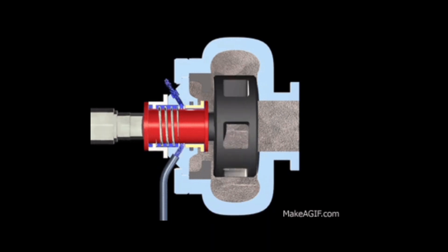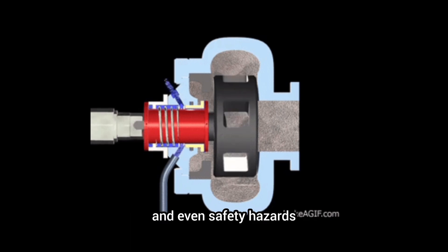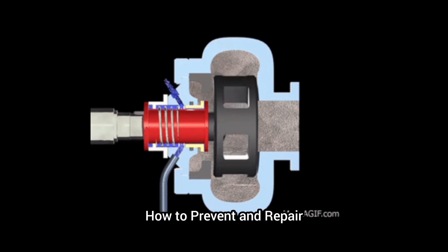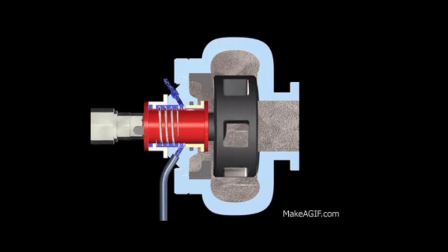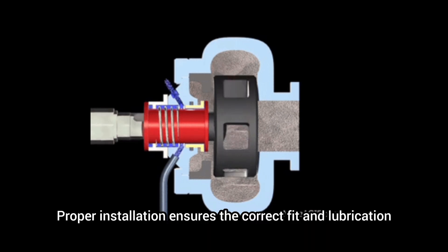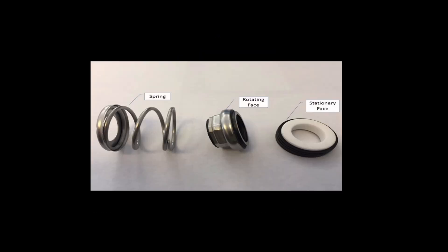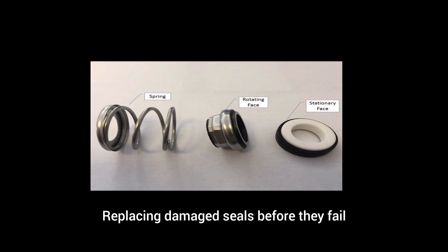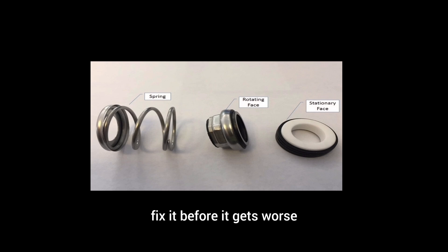The effects include equipment failure, reduced efficiency, and even safety hazards. To prevent and repair: regular inspections help catch wear and tear early; proper installation ensures correct fit and lubrication; alignment checks prevent undue stress on the seal; and replacing damaged seals before they fail avoids major breakdowns. Don't ignore that leak — fix it before it gets worse.